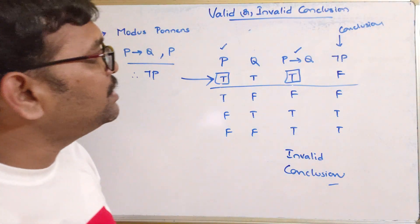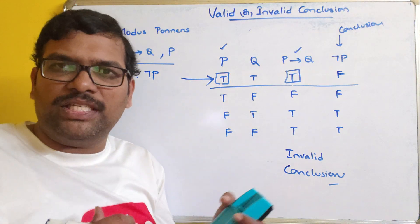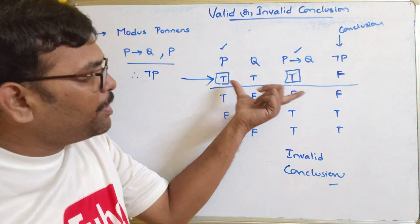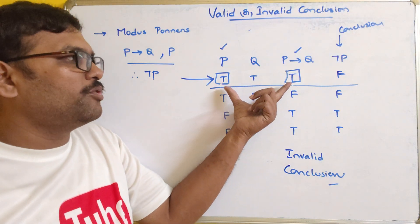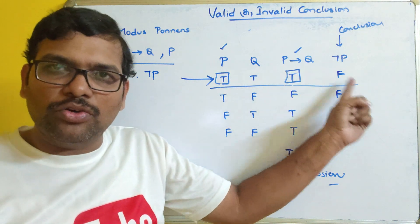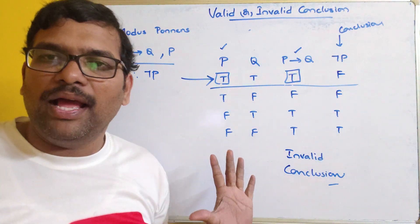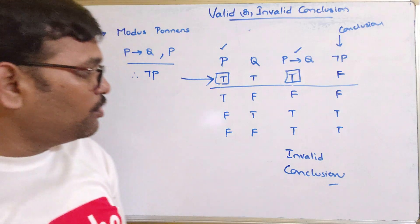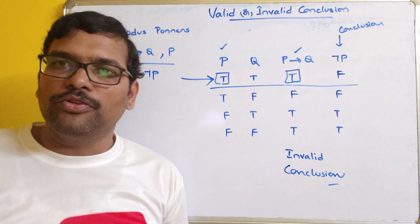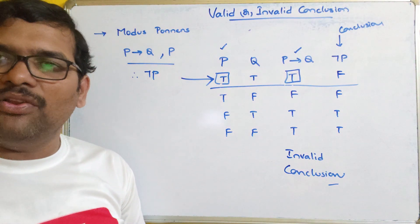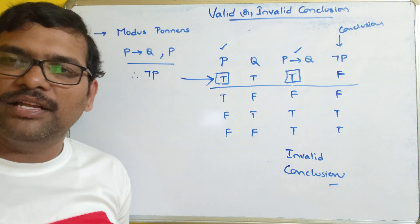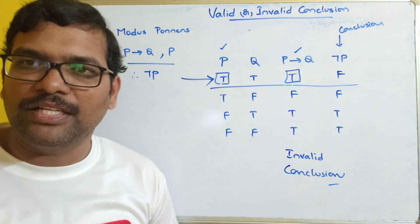You can practice with the previous questions — just find out the truth table and compare the premises where we are getting the truth value, then compare it with the corresponding conclusion. If it also gets true, then we can say it is a valid conclusion. Hope you understood this. If you have any doubts, feel free to post in the comment section and I will try to clarify. If you enjoyed the session, like, share with your friends, and don't forget to subscribe to our channel. Thanks for watching.